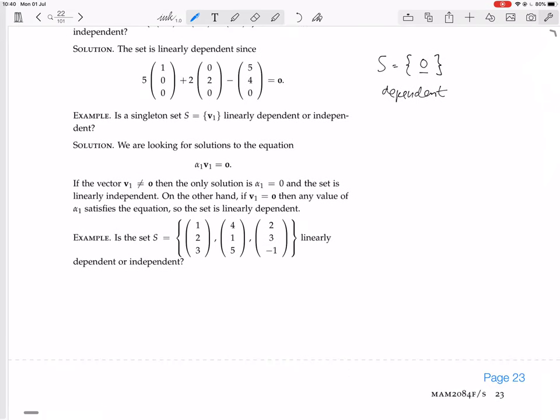Another example. Is the set S containing (1,2,3), (4,1,5), (2,3,-1) linearly dependent or independent?